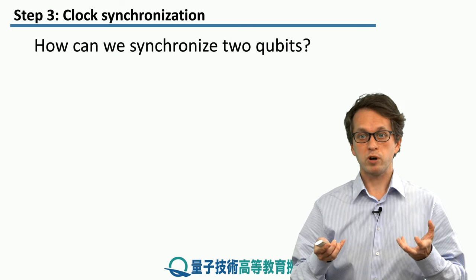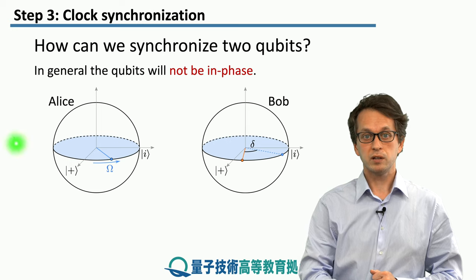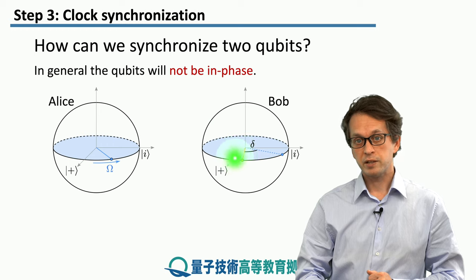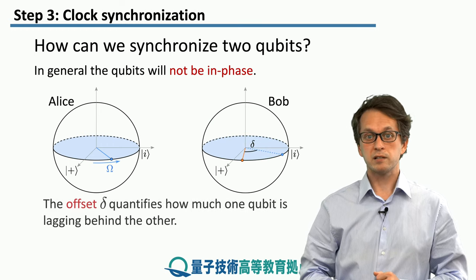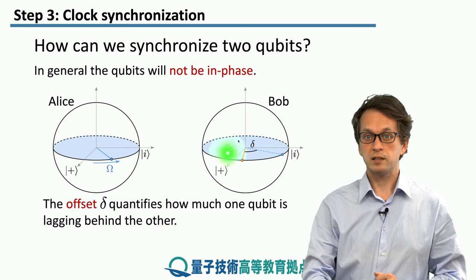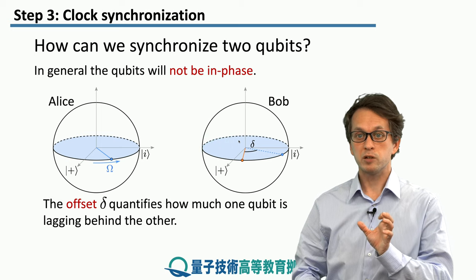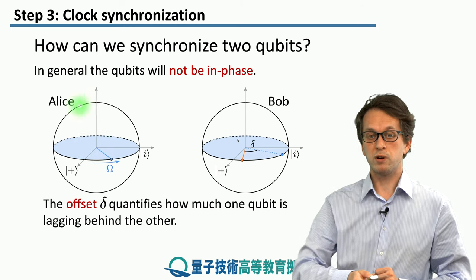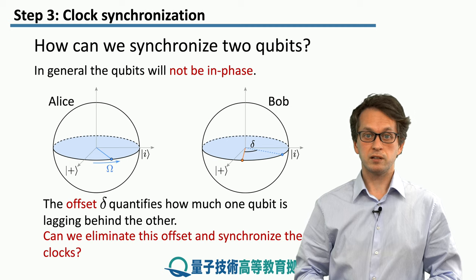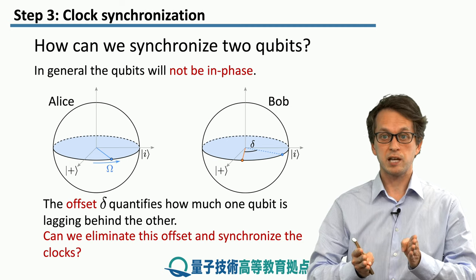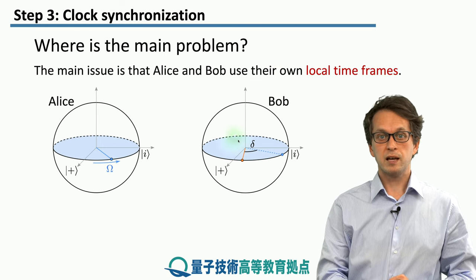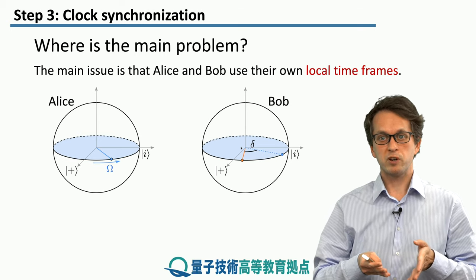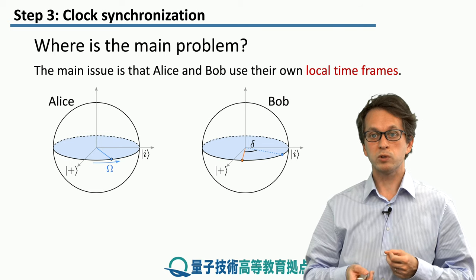The question now is how can we synchronize two qubits? Say Alice has qubit 1 precessing at frequency Ω, and Bob also has one precessing at the same frequency, but with some offset — it is lagging behind Alice's qubit clock. This offset δ quantifies the lag in terms of the angle between Bob's and Alice's points on the Bloch sphere in the x-y plane. What we are trying to do is eliminate this offset δ so their clocks are synchronized and show exactly the same time. The main problem is that Alice has her local time frame and Bob has his own, and they need to exchange messages to agree on a global time frame.